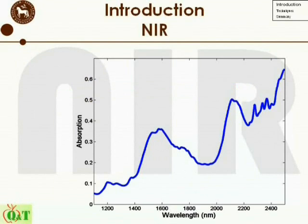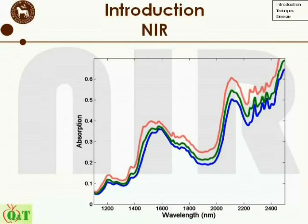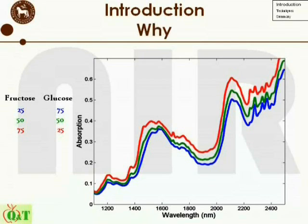Here you can see three recorded NIR spectra from 1100 to 2500 nm. These three samples are very simple — they are just mixtures of two sugars, glucose and fructose. The concentration of fructose is gradually increasing from 25% in the blue to 50% in the green and 75% in the red. As you can see from these three simple spectra, there are three features which are unwanted, especially from a PLS regression point of view.